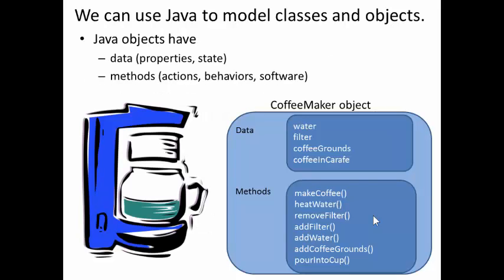We can use Java to model classes and objects. Java objects have data, that is properties and state, and we have methods, actions, behaviors, implemented in software.